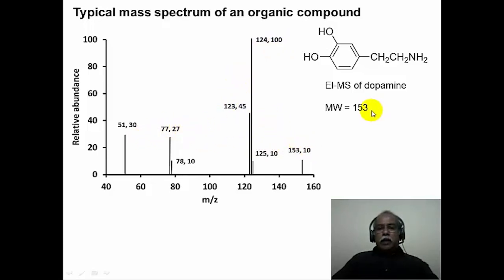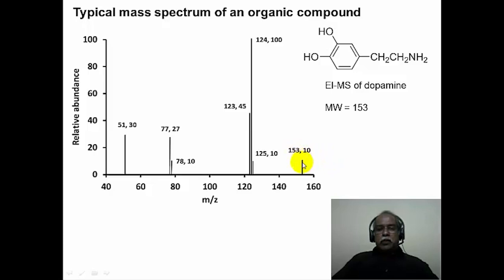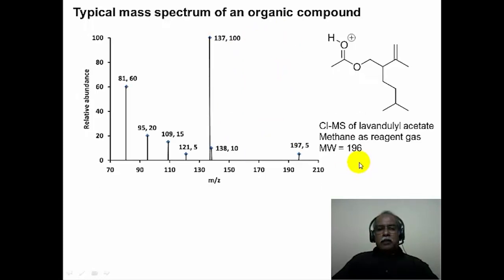This compound is called dopamine, one of the neurotransmitters, and it has a molecular weight of 153. The molecular ion is registered at the highest m/z value of 153, but it is not the most intense ion. The reason is that the molecular ion further undergoes decomposition and fragmentation to give various other ions. One of the fragment ions is the most abundant, with 100% intensity in the mass spectrum.